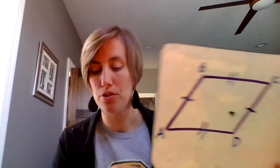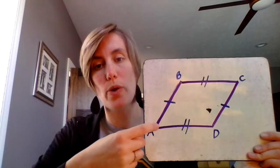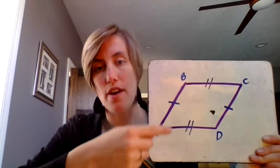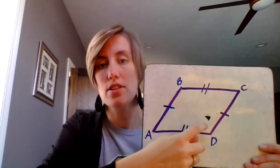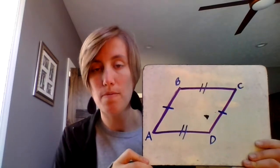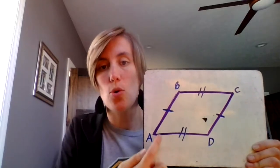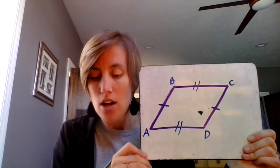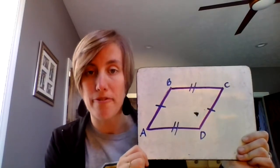A quadrilateral is simply a polygon with four sides and four angles. You can name a quadrilateral by the vertices of its angles. The vertices is where the lines meet to form angles in these corners. So this is a quadrilateral that we would name A, B, C, D, going around the lines. Quadrilateral ABCD is a possible name for the figure shown.